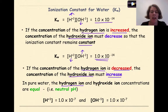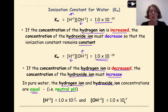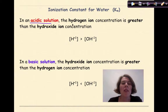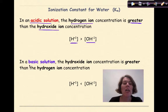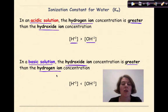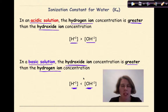In pure water, the hydrogen ion and hydroxide ion concentrations are equal — in other words, a neutral pH. If we take 1 times 10 to the negative 14 and split it, the hydrogen ion concentration equals 1 times 10 to the negative 7, and the hydroxide ion concentration also equals 1 times 10 to the negative 7. In an acidic solution, the hydrogen ion concentration is greater than the hydroxide ion concentration. In a basic solution, the hydroxide ion concentration is greater than the hydrogen ion concentration. But the key thing to remember is that these concentrations, when multiplied together, must always equal 1 times 10 to the negative 14.